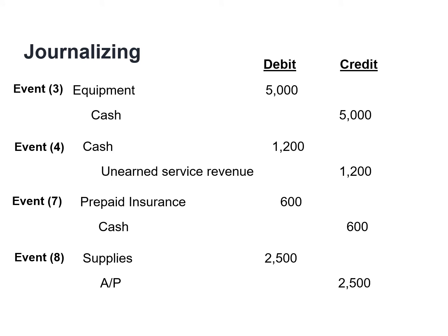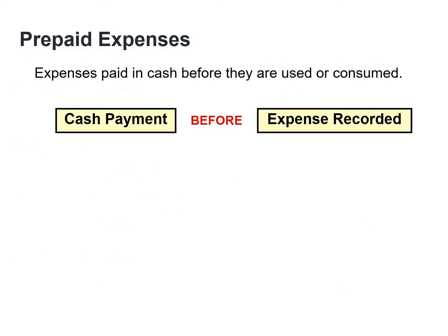In each of these four transactions, we deferred or postponed either revenue or an expense. We need to make an adjusting entry to record the portion of expenses that was incurred and record any revenue earned during the period. Companies record payments of expenses that will benefit more than one accounting period as assets. These prepaid expenses, or prepayments, are expenses paid in cash before they are used or consumed.